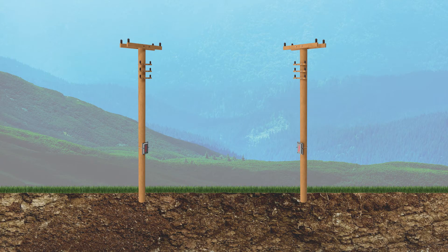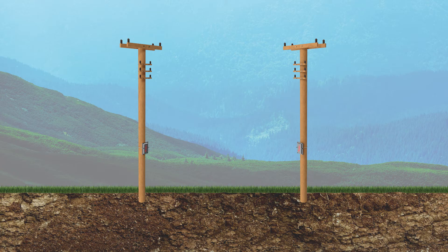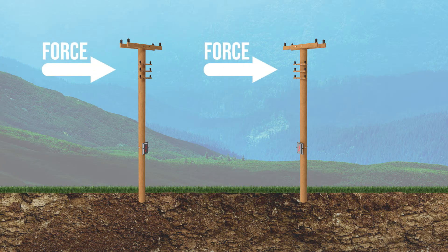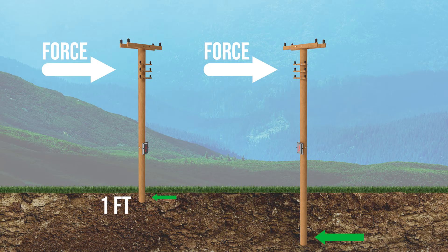Think about telephone poles. If you had two identical telephone poles next to each other — one sunk one foot in the ground and the other sunk six feet in the ground — which one would stand up to wind better? The one sunk six feet deep, of course. The wind blows against both poles with the same force and direction. However, the buried end of each pole acts as a lever pushing against the dirt. The first pole has only a one-foot lever pushing against one foot of dirt. The second has a six-foot lever pushing against six feet of dirt. The six-foot one can withstand more force. So implant length is important for resisting off-axis forces.